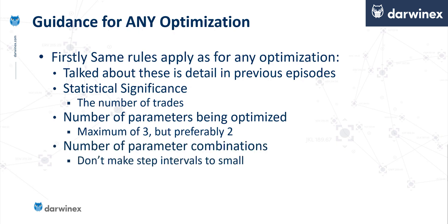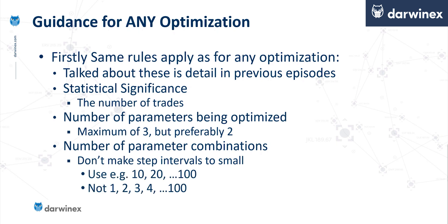The next point worthy of note is the number of parameter combinations, which is a function of the number of parameters but also the number of step values for each parameter. The simple rule of thumb here is that there needs to be a significant percentage difference between each of those. For example, if you have a parameter, it would be better to use values of 10, 20, 30 up to 100, rather than 1, 2, 3, 4 — the difference between those latter values is so insignificant it isn't worth the extra time to test them. The impact on overfitting here is less than the previous point, but it's still important enough to take note of.